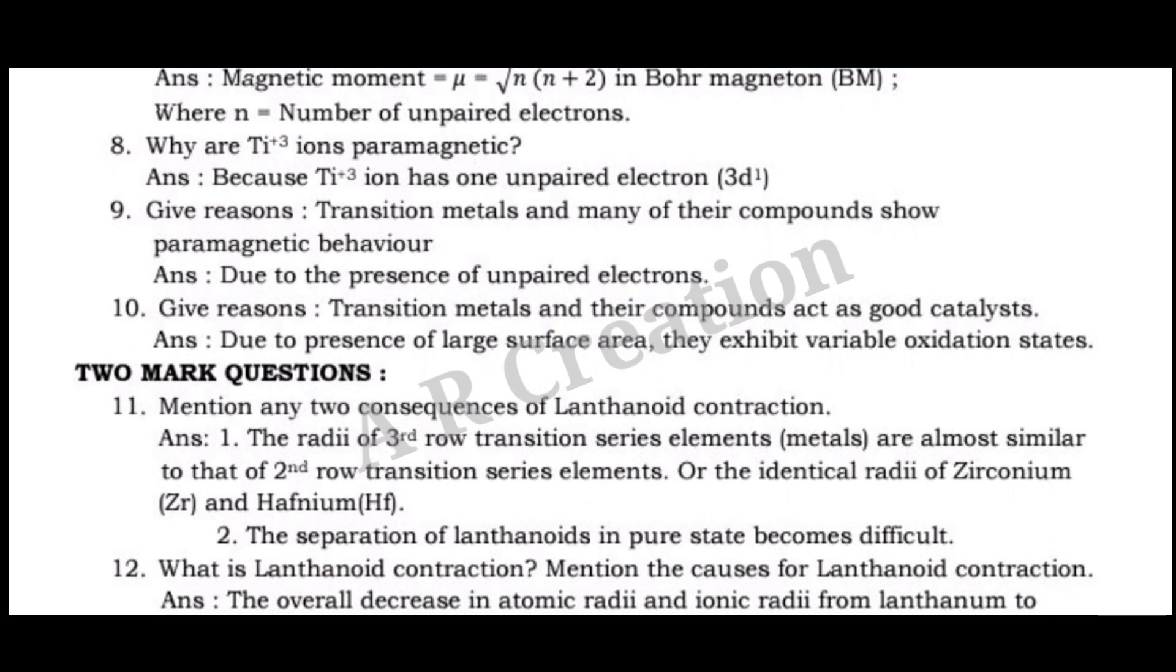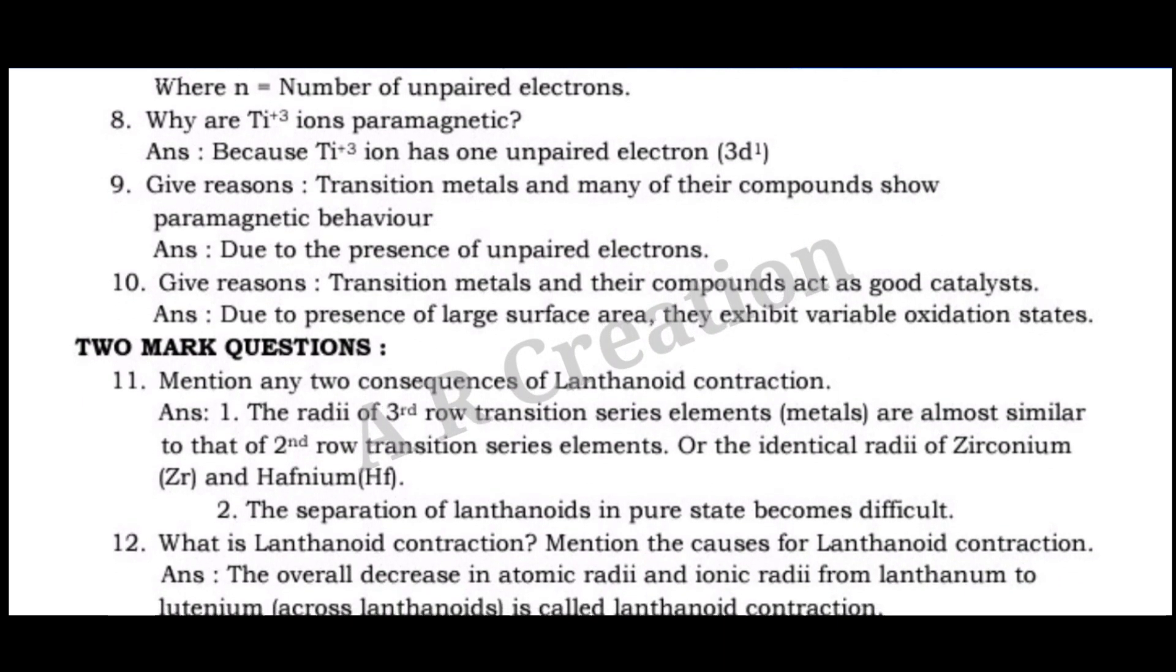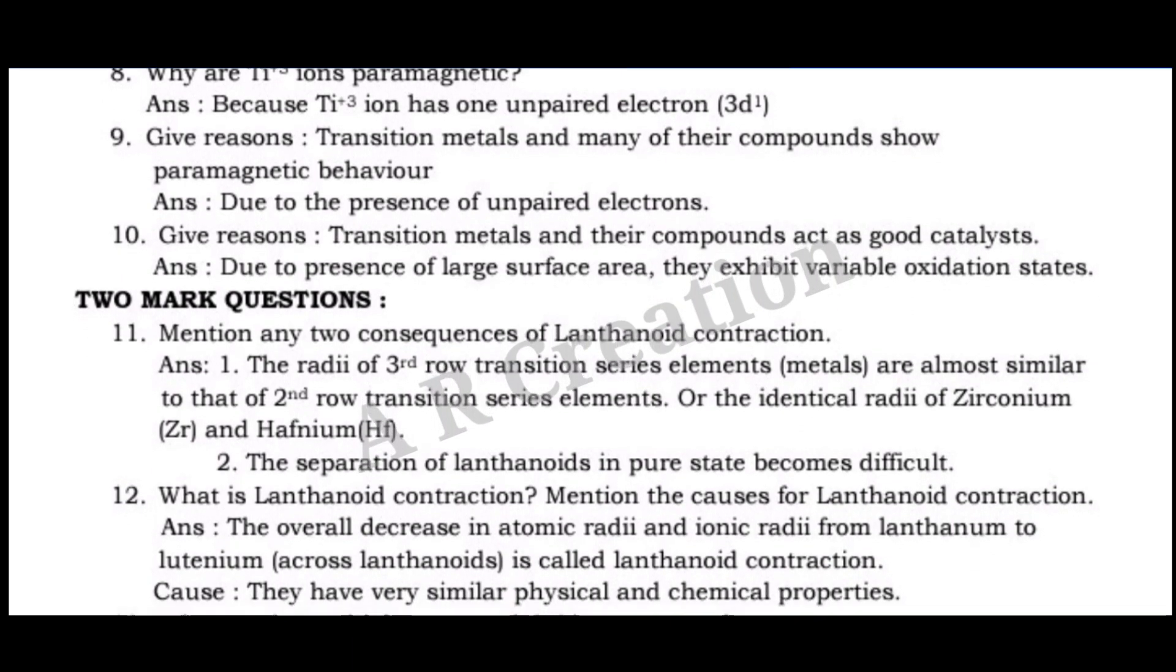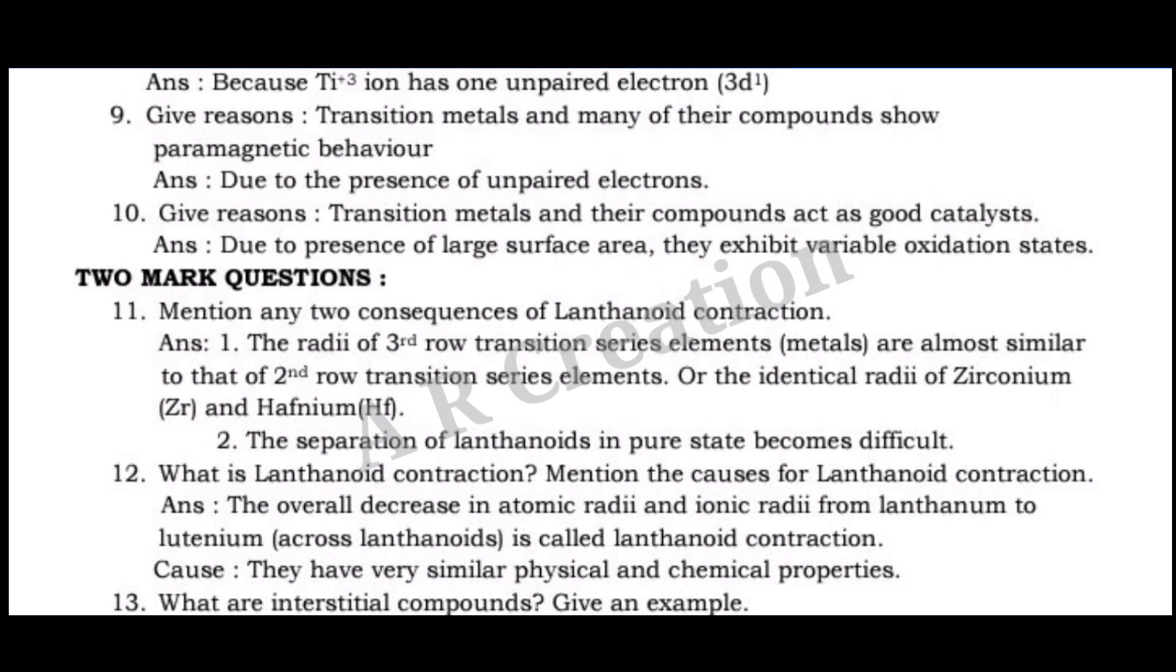Question 9. Give reasons: Transition metals and many of their compounds show paramagnetic behavior. Answer: Due to the presence of unpaired electrons.